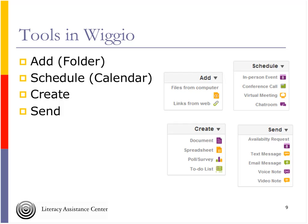If you want to find out who's available for a specific date, you can do that through the sending capability. If people provide their cell phone numbers, you can text them. You can send email since everyone needs an email address to create an account. Voice notes and video notes are particularly interesting — if you're working with reluctant learners or people with low literacy, a voice or video note might be a better way to communicate, or it could be a dictation exercise.